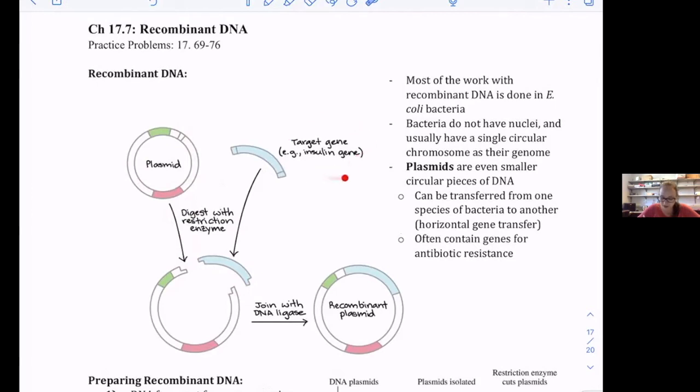And then our target gene—whatever DNA sequence we're trying to make the protein of—we're going to add it in, and it joins with the DNA of the plasmid and makes a new recombinant plasmid. So we changed the DNA of that circular chromosome.